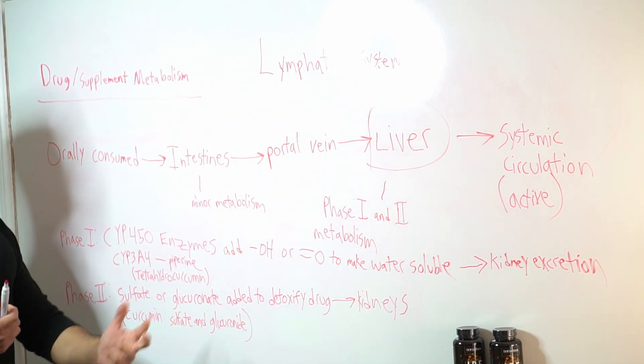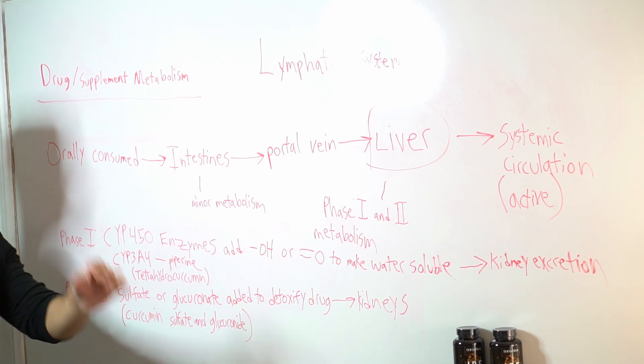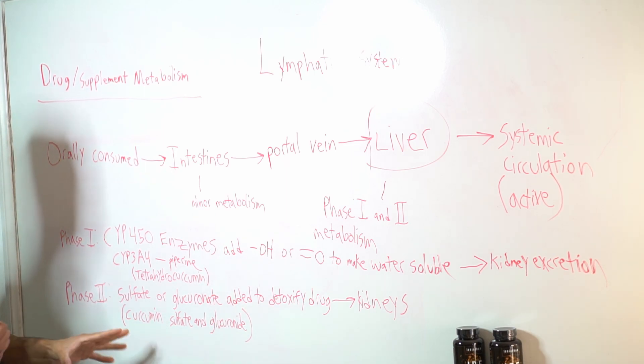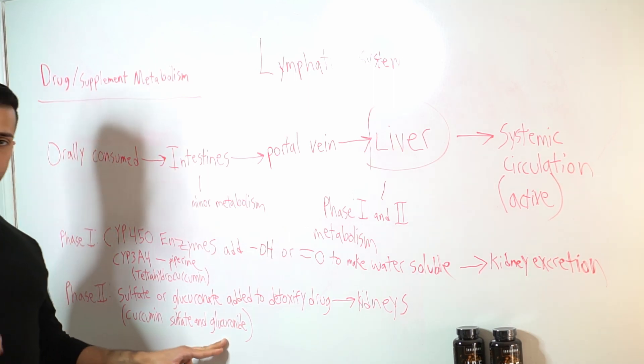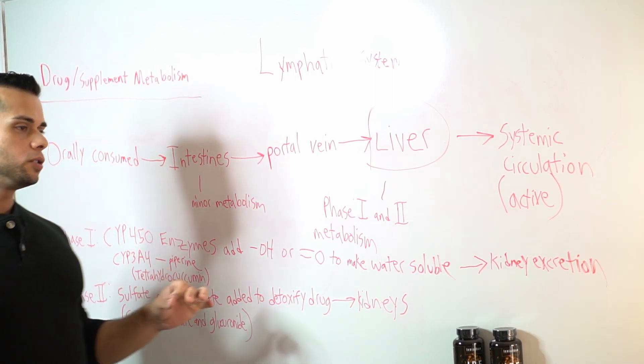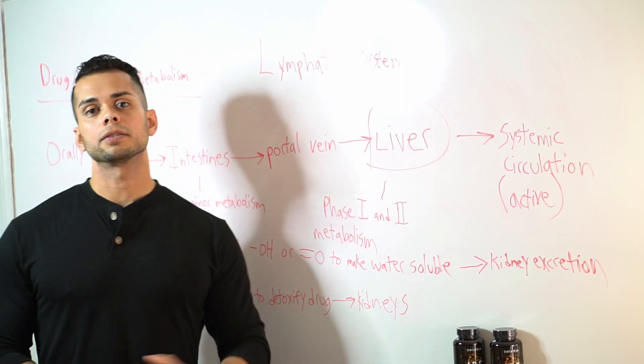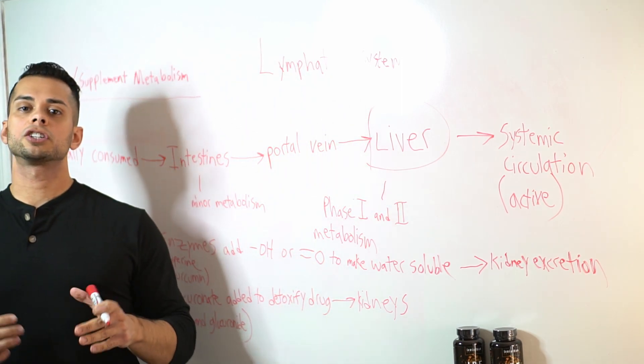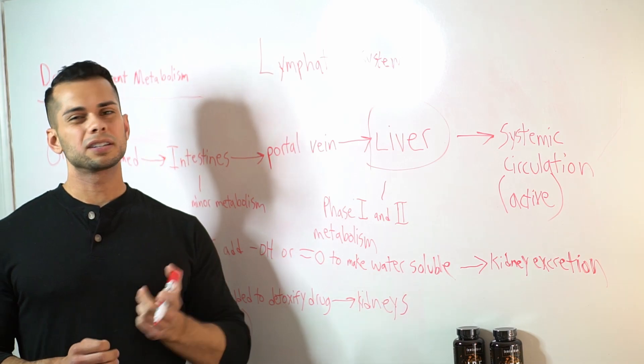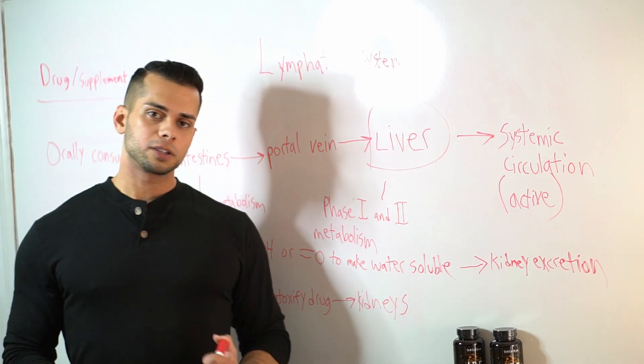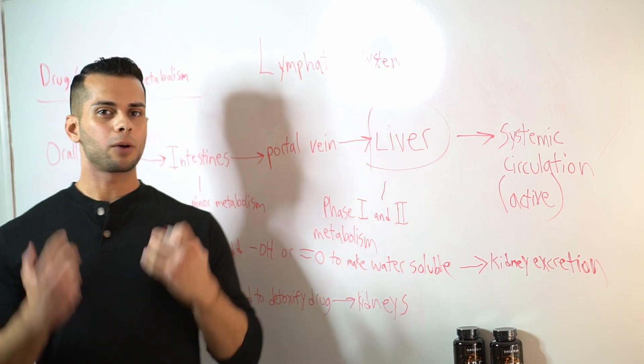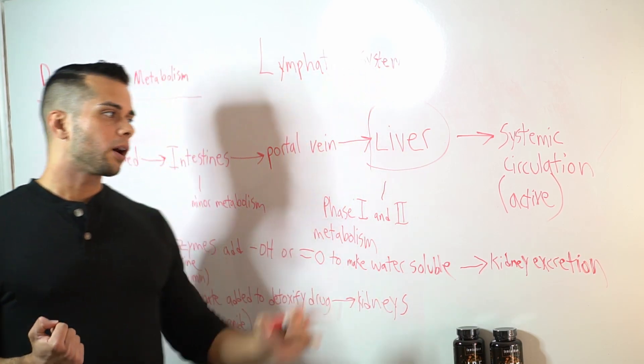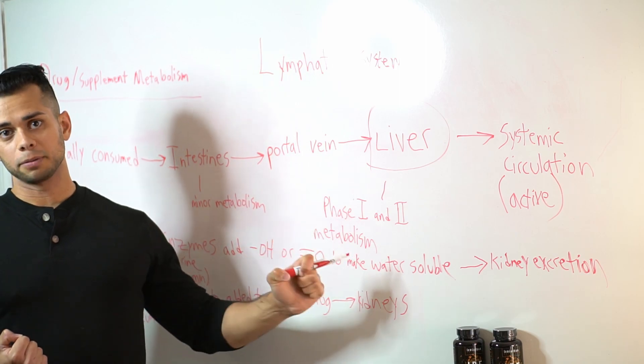So in the case of curcumin, we have a major byproduct of curcumin by phase two drug metabolism to curcumin sulfate and curcumin glucuronide. So these two metabolites of curcumin are known to be biologically inactive. And this is a big reason for curcumin's poor bioavailability in the human body, because so much of the curcumin that we ingest is broken down in the liver by phase two metabolism.